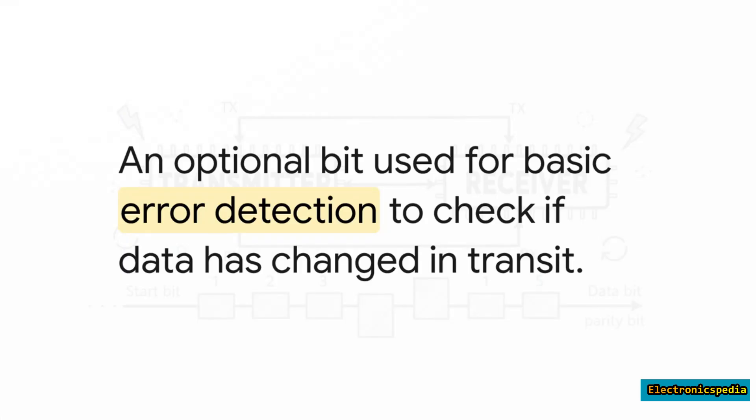Okay, next up is an optional but pretty clever little feature: the parity bit. This is a super basic form of error checking. The transmitter just adds one extra bit to make the total number of ones in the data either even or odd, depending on the setting. The receiver does the same math, and if the numbers don't match up, it knows something probably got scrambled along the way.